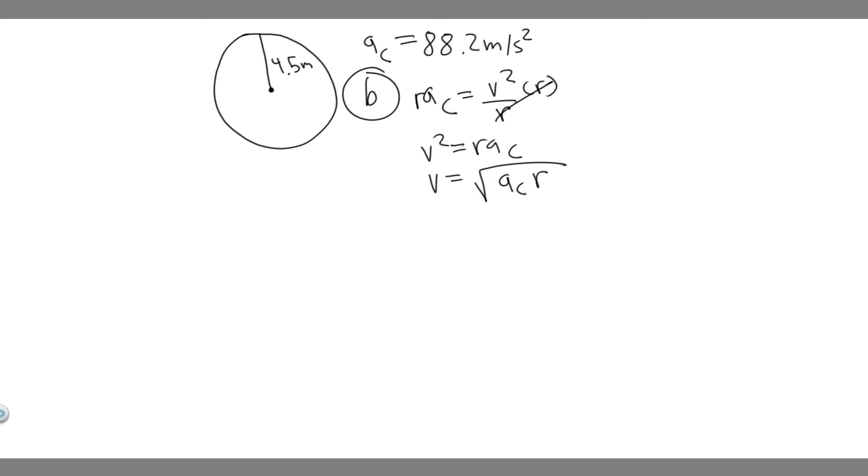So what does this mean? We're trying to find the velocity at this centripetal acceleration with a radius of 4.5 meters. All we have to do is plug it into this formula. If you go ahead and do this, take the square root of 88.2 times the radius, which is 4.5. So plug this in: the square root of 88.2 times 4.5.